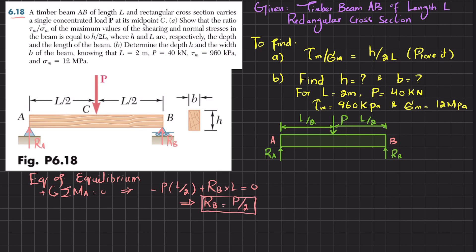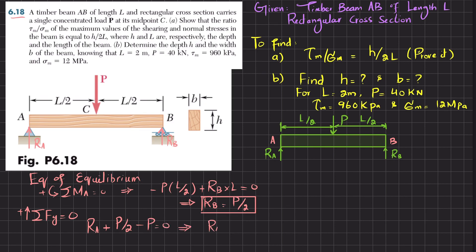Now that RB = P/2, we find RA using the equilibrium condition: sum of all forces in the y-direction equals zero. So RA + RB - P = 0, giving RA = P/2. Both reaction forces are RA = RB = P/2. Now we will draw the shear force and bending moment diagram.